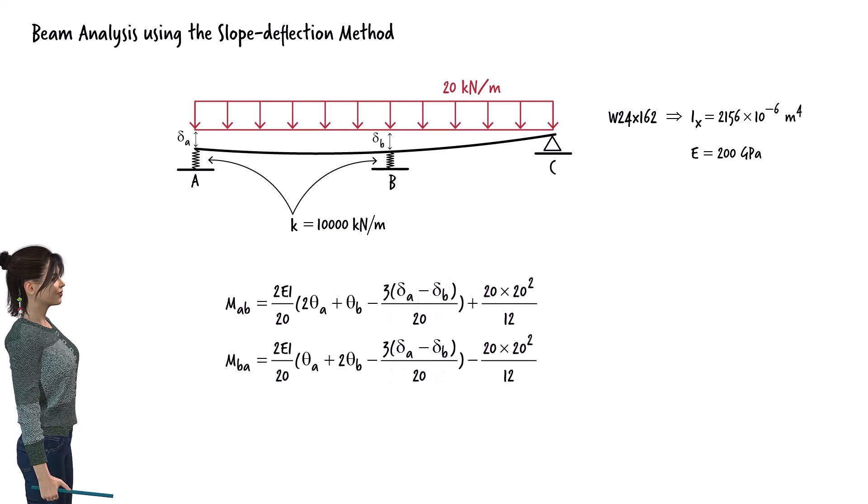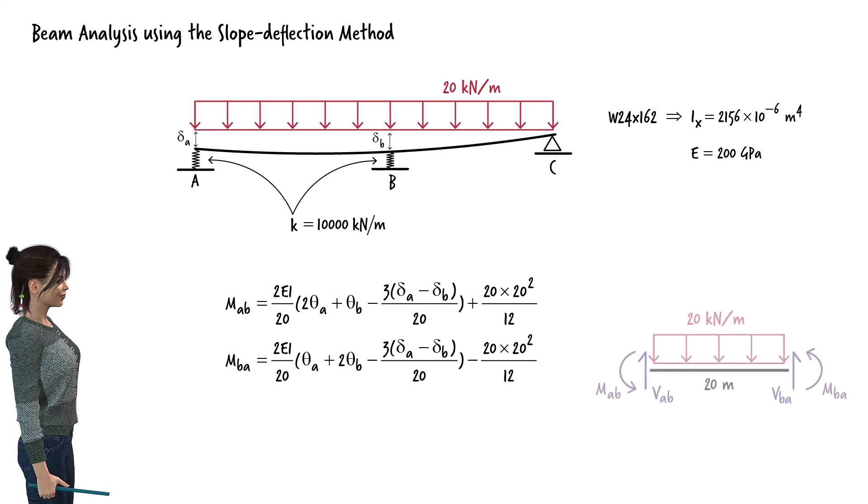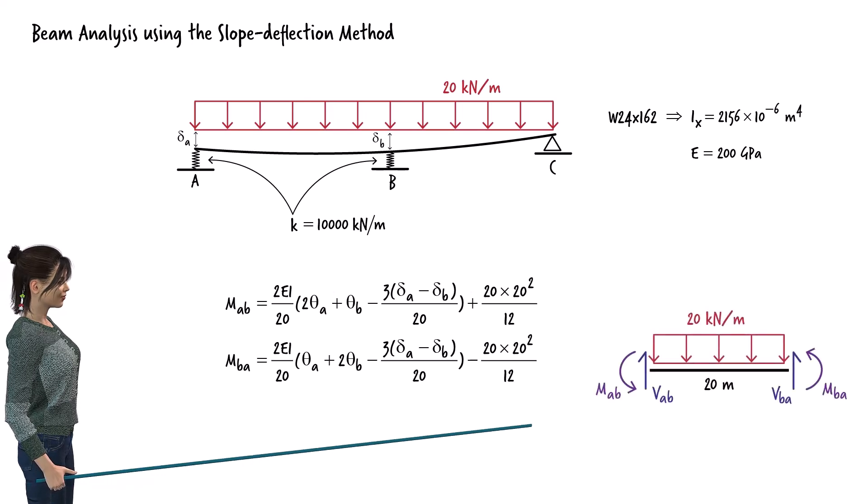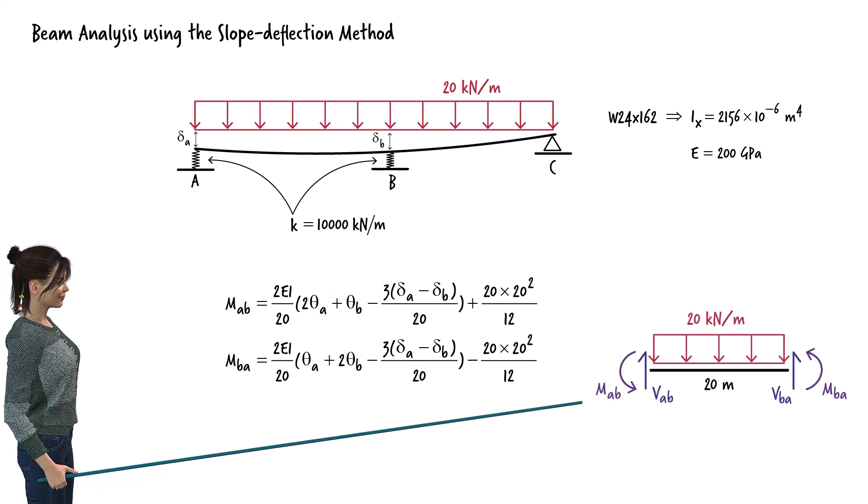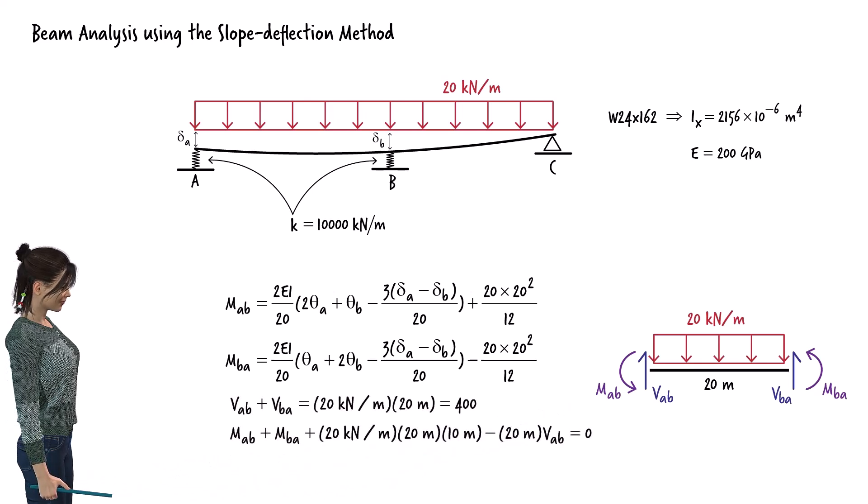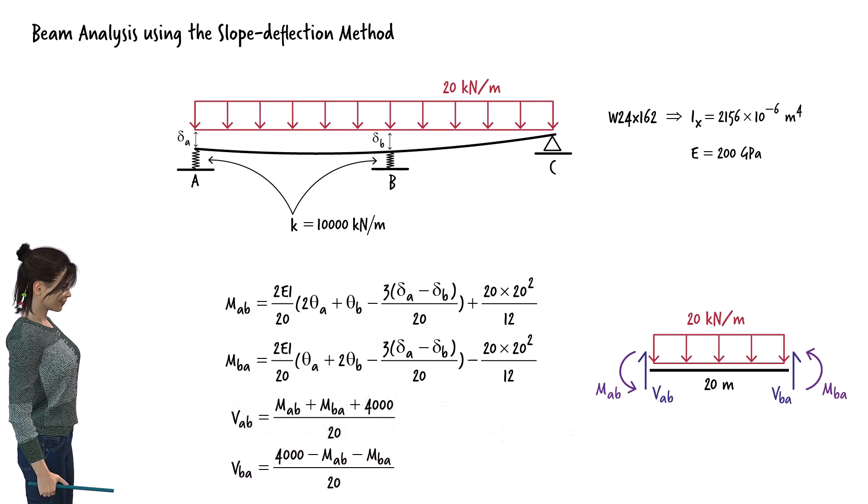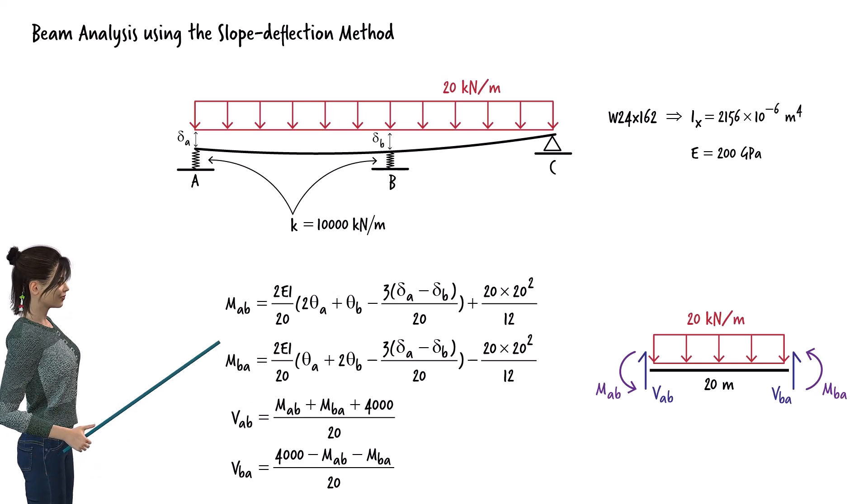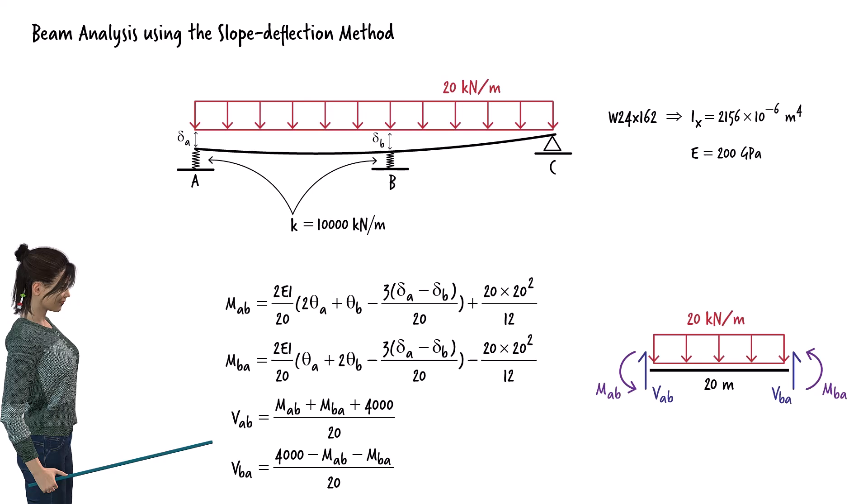We can express the shear force at each end of the segment in terms of its end moments. Referring to this free body diagram for segment AB, we can write. By solving these equations for VA and VB, we get. Using the moment equations, we can express the shear equations in terms of theta and delta.